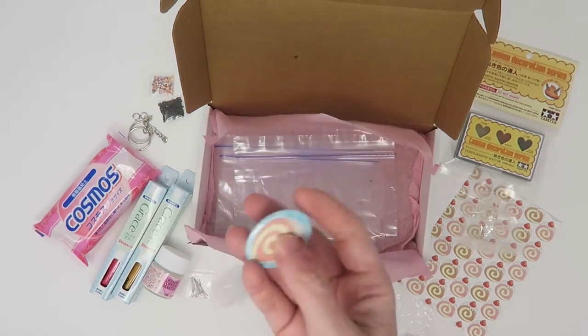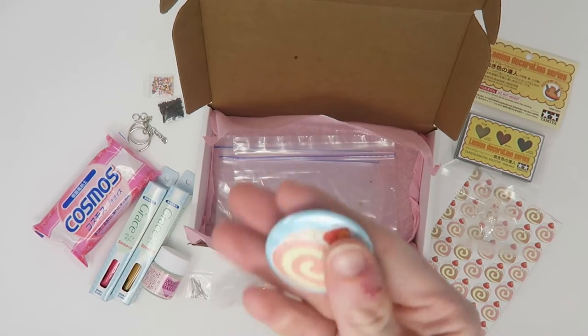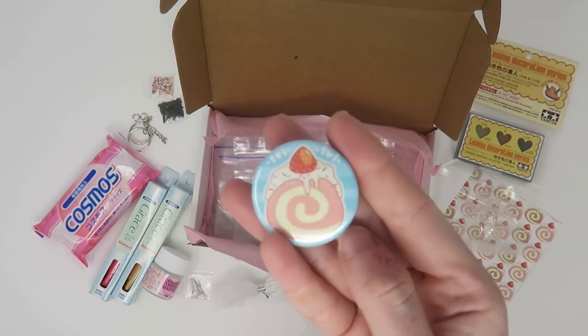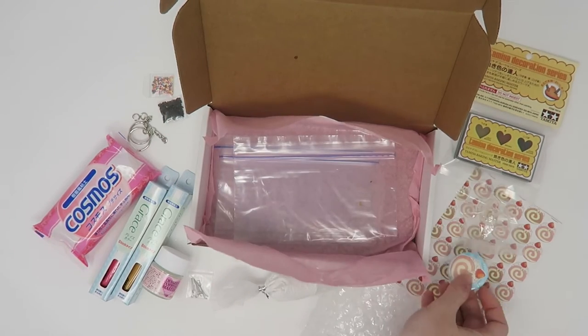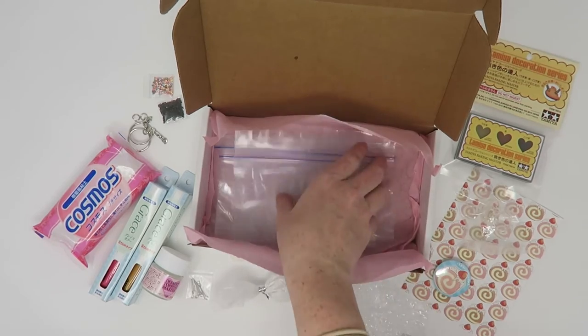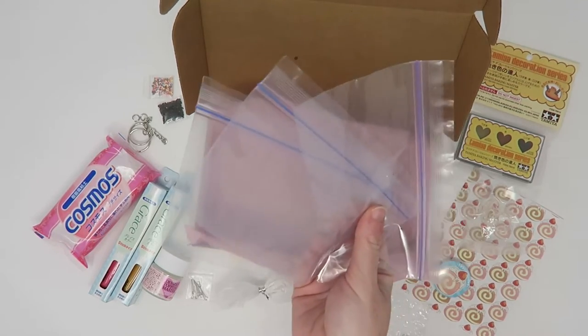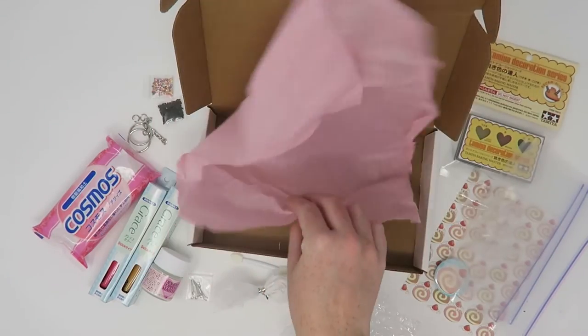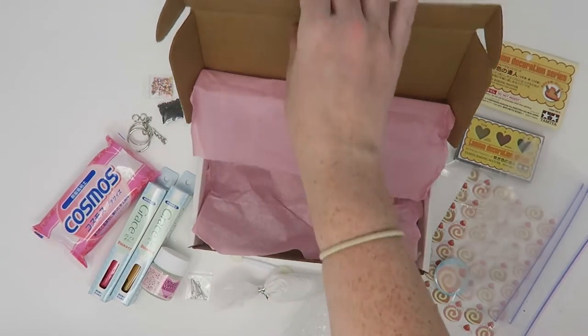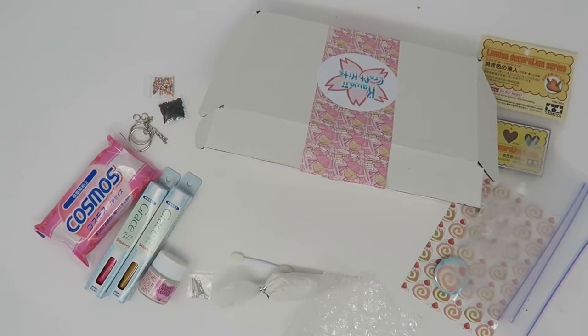Then we have this pin with the Swiss roll design and your box will come with either the strawberry or the chocolate version. The very last item are these extra baggies I included just so you can seal up your air dry clay, the Grace color sticks, and the deco whip once you open them. That is everything so let's get started into the projects now.